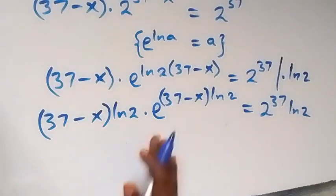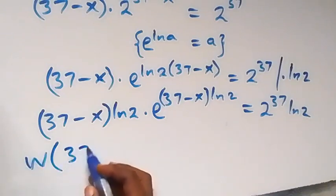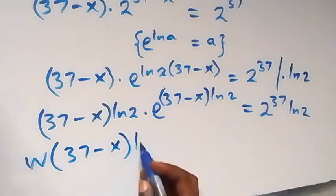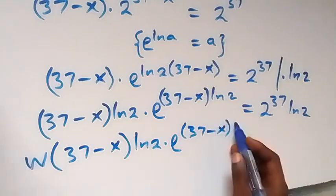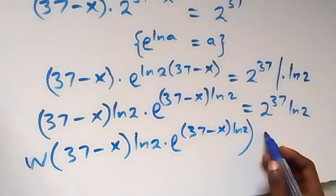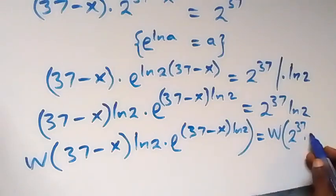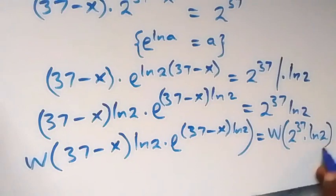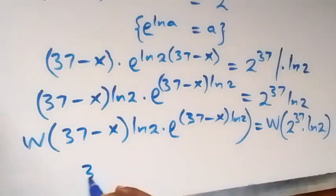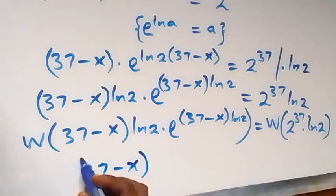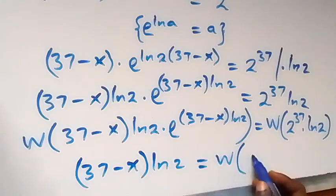From here we can introduce the W function on both sides. So we have W of 37 minus x times ln 2, times e raised to power 37 minus x times ln 2, now equals W of 2 raised to power 37 times ln 2. And so 37 minus x times ln 2 equals W of 2 raised to power 37 times ln 2.